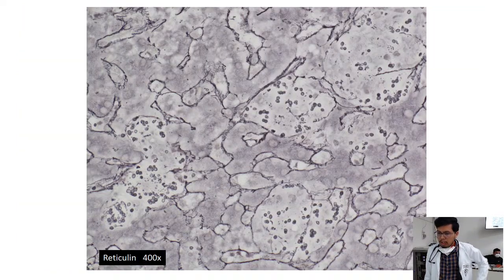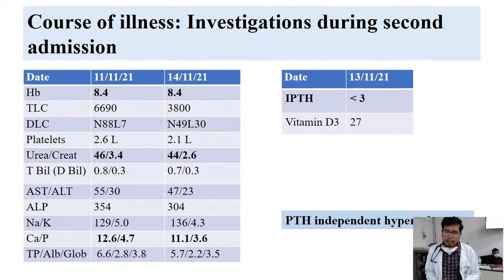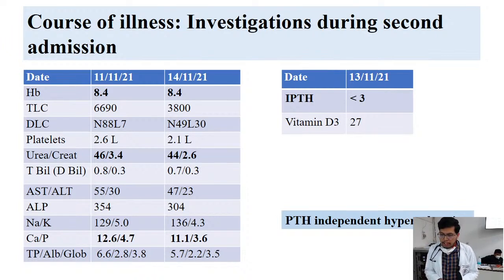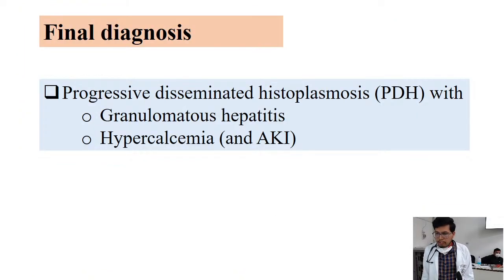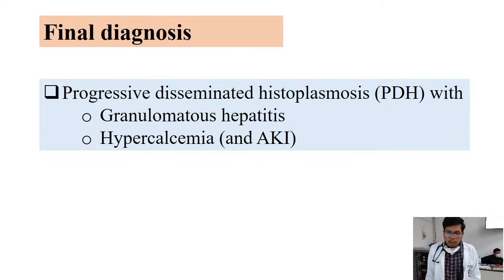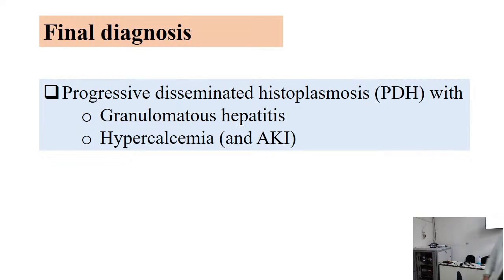Interestingly, when the patient was readmitted after the liver biopsy report for treatment, he was found to have deranged renal functions along with hypercalcemia — the AKI most likely secondary to hypercalcemia. There were also surprisingly high PTH levels, representing PTH-independent hypercalcemia, most likely due to the granulomatous disease. The patient was started on amphotericin B; after three doses, there was significant improvement in serum calcium and creatinine levels. Final diagnosis: progressive disseminated histoplasmosis with granulomatous hepatitis, hypercalcemia, and AKI.